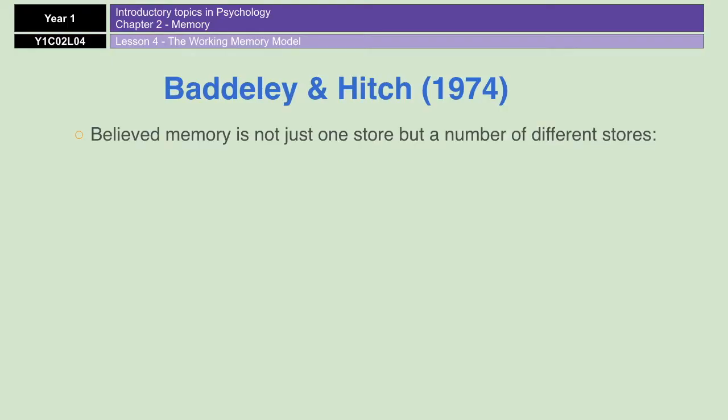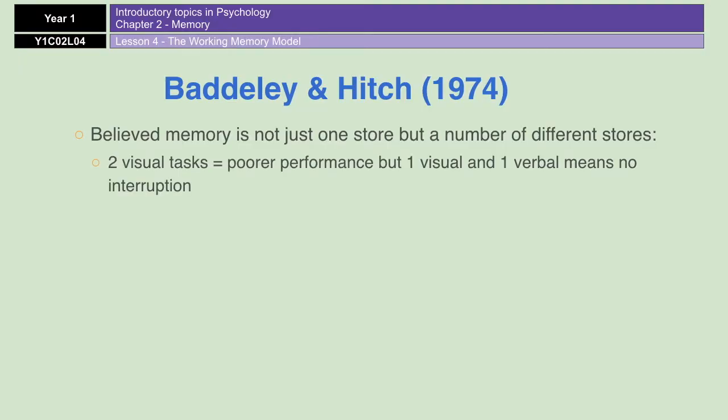Baddeley and Hitch actually believe that memory isn't just one store, but is a number of different stores. And if you have a number of different stores, then technically it would explain why the dual task studies actually worked, because if you're using one verbal and one visual store, then it means there's no kind of interference or interruption between the two.